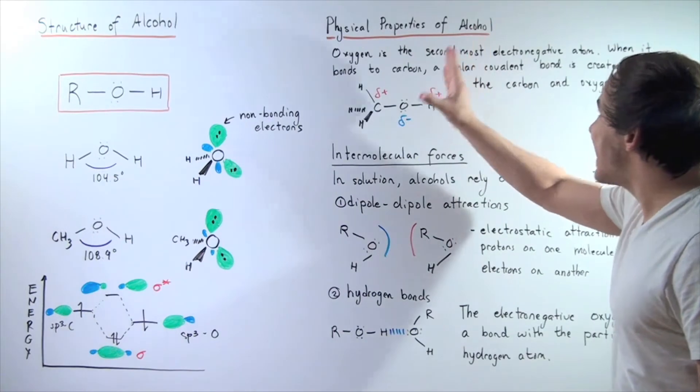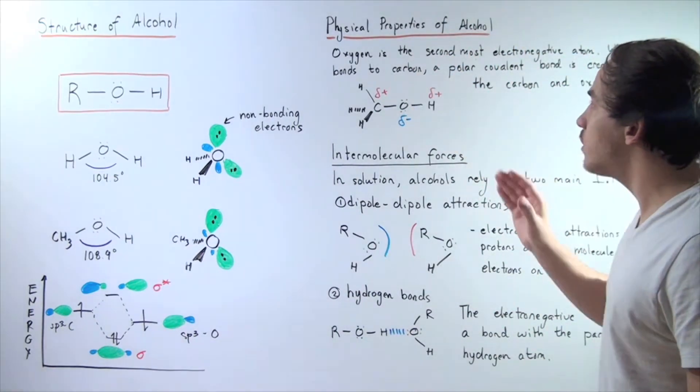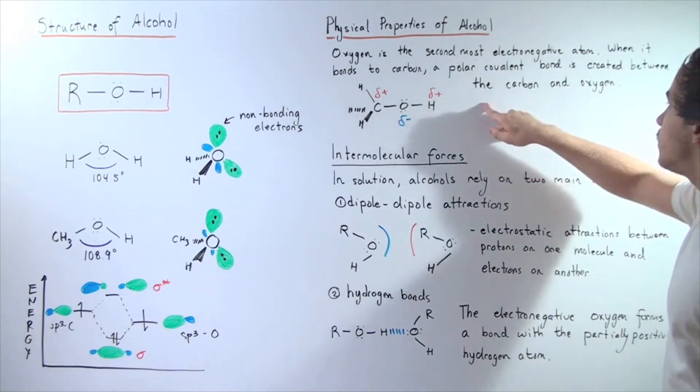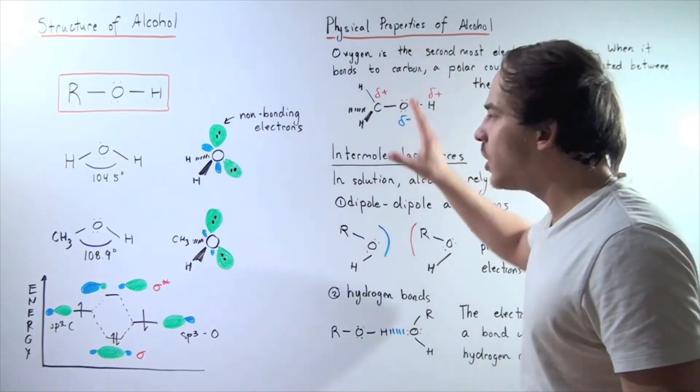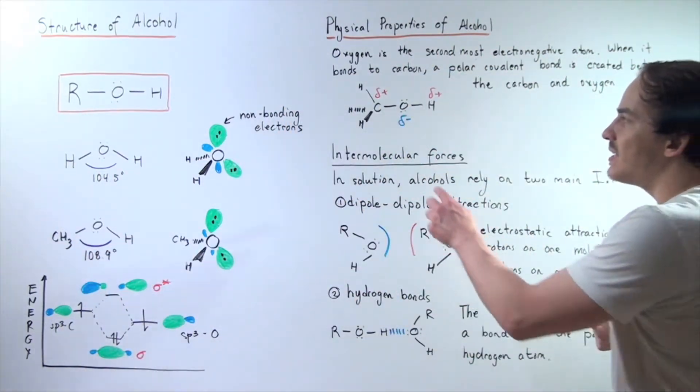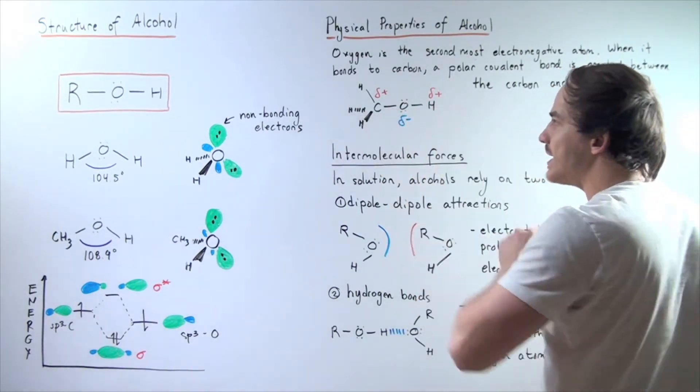Oxygen is the second most electronegative atom. When it bonds to carbon, a polar covalent bond is created between the carbon and the oxygen. In other words, if we look at our methanol diagram more closely,